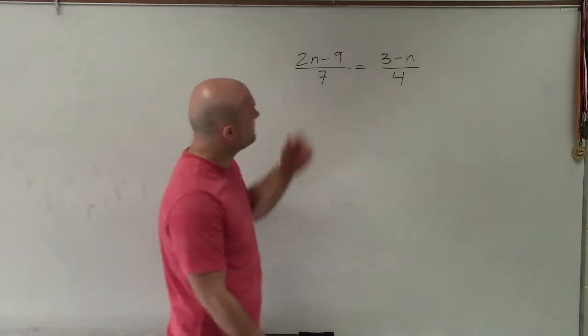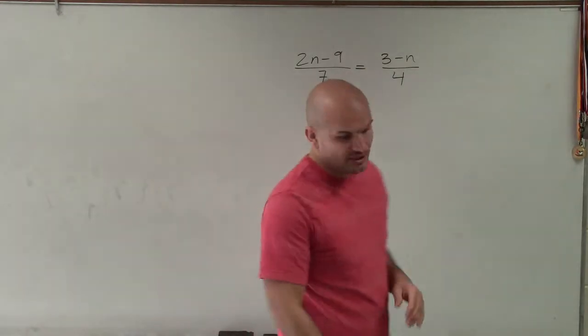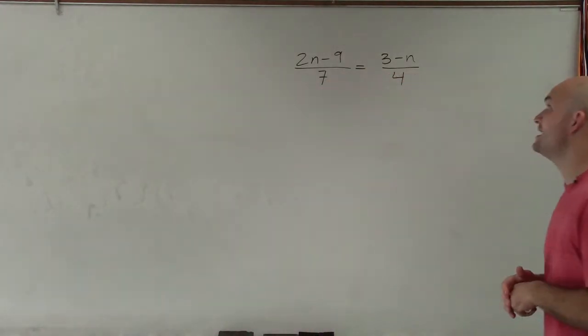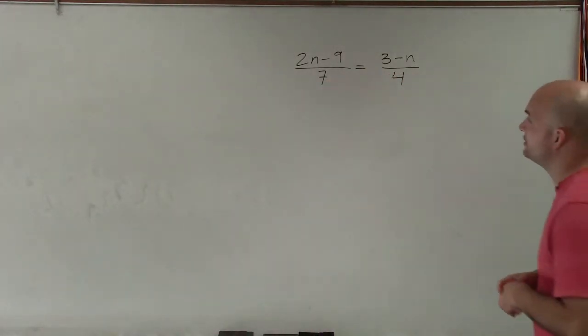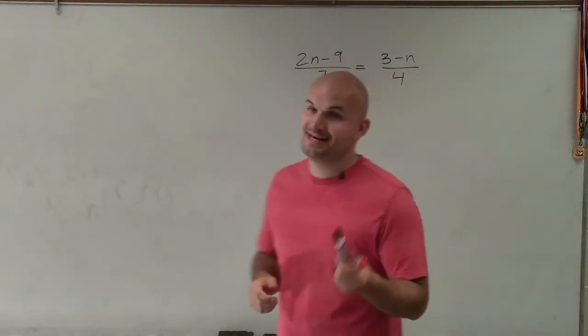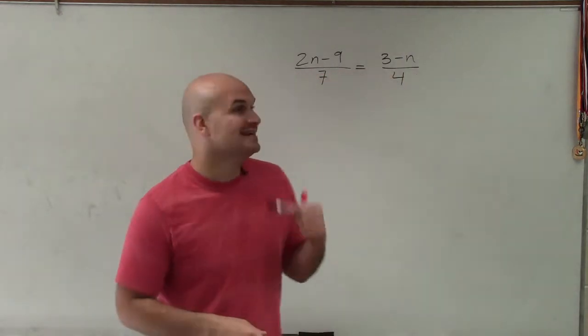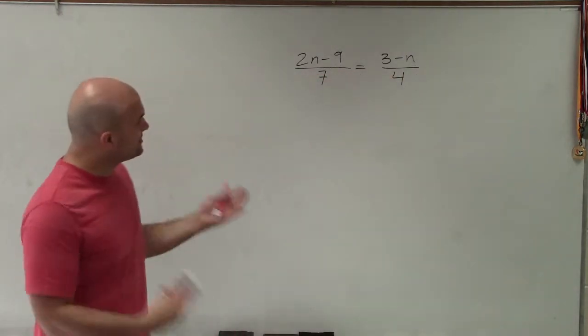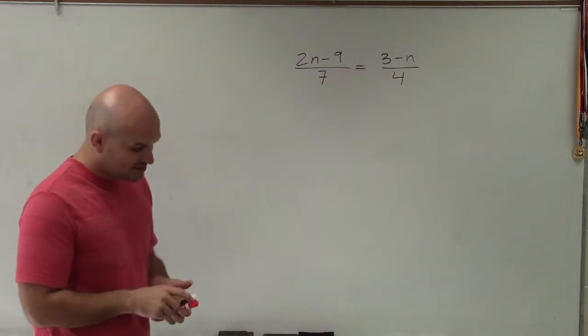Welcome, ladies and gentlemen. What I have here is a proportion: 2n minus 9 divided by 7 equals 3 minus n divided by 4. What I want to do is solve for n.